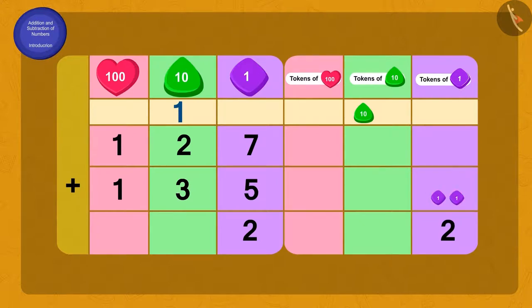Now how many tens do we have? 6 tens. Now on adding all the hundreds, what do we get? 2 hundreds.